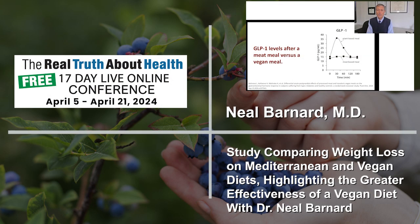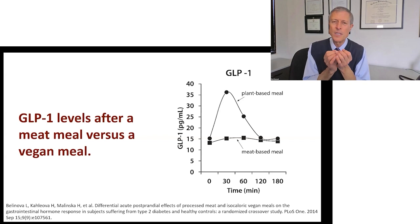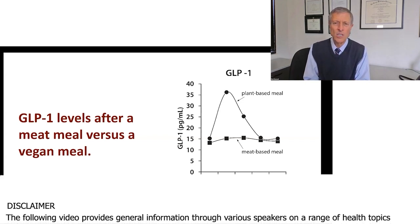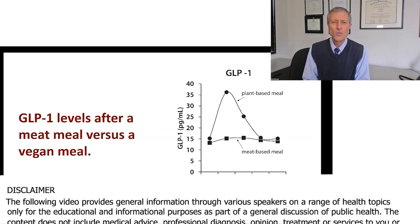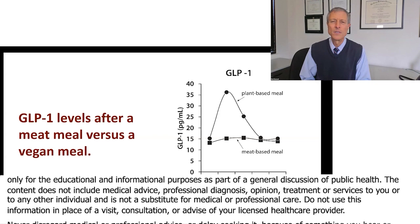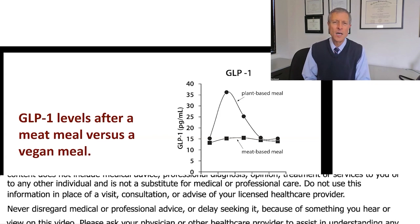Is it better? Dramatically better. You see this huge spike in GLP-1 with the plant-based meal. What's the difference? Your body appears to be looking not just for the fact that you put something in your digestive tract, but for certain foods that are high in fiber, for example, or foods that are high in complex carbohydrate.